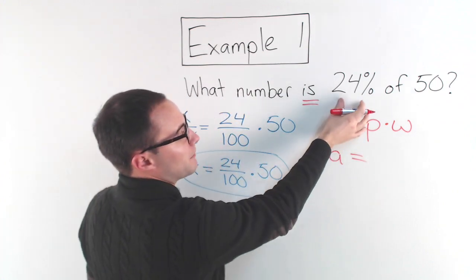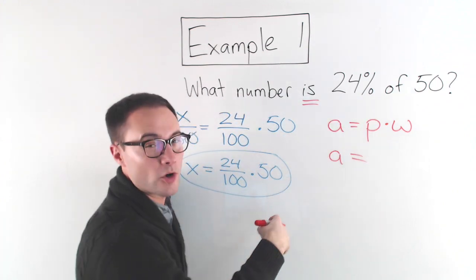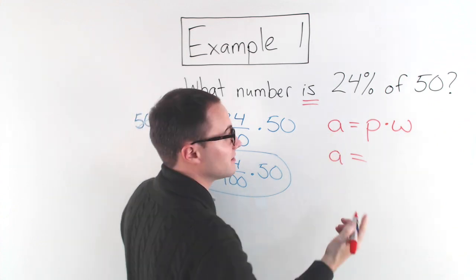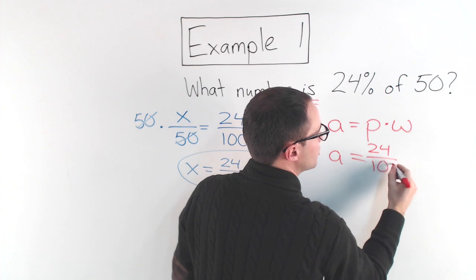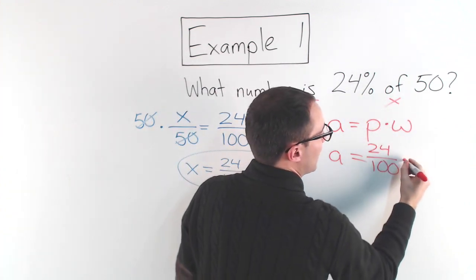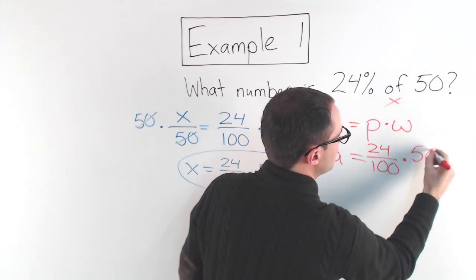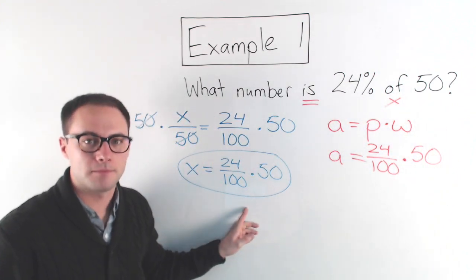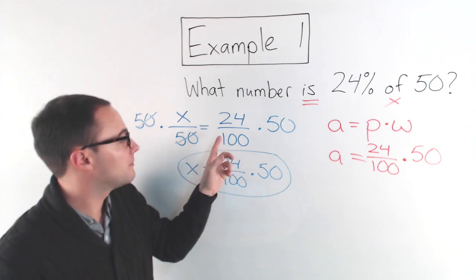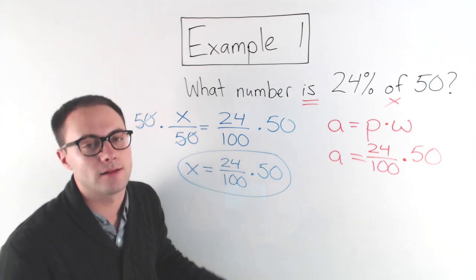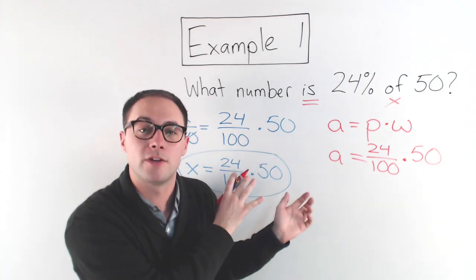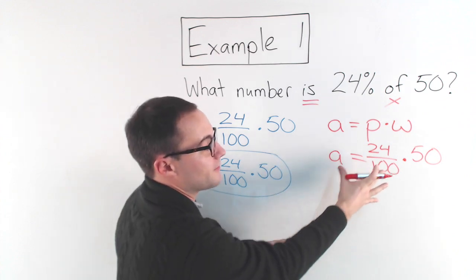So I can either write that as a decimal or a fraction. Let's write it as a fraction. That would be 24 over 100. Of means multiplication times 50. Exactly the same as what we got after we did that one step from our proportion. So this is just a different way to solve the same type of problem without using a proportion, with using an equation.